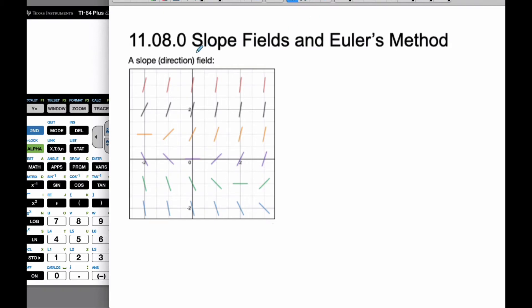Hello, it's Mr. Rops here, and today we're going to talk about what is called slope fields. When you see a picture like this, this is what is called a slope field or a direction field.